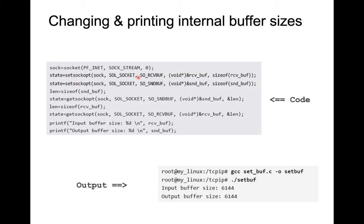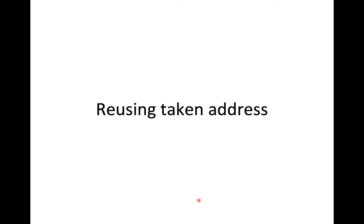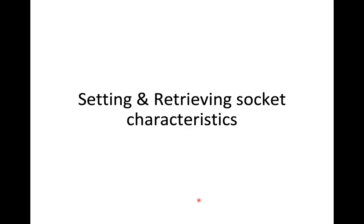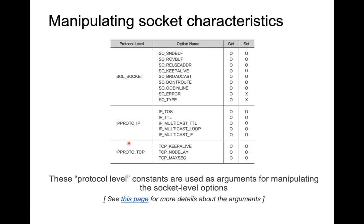We used setsockopt to assign values for the sending and receiving buffers, and after doing that we retrieved those values to confirm they were altered. I strongly recommend you try the IP-level and TCP-level protocol options as well. Do as much practice as possible — retrieve values, set values, then retrieve again — to get a better insight into manipulating socket characteristics.